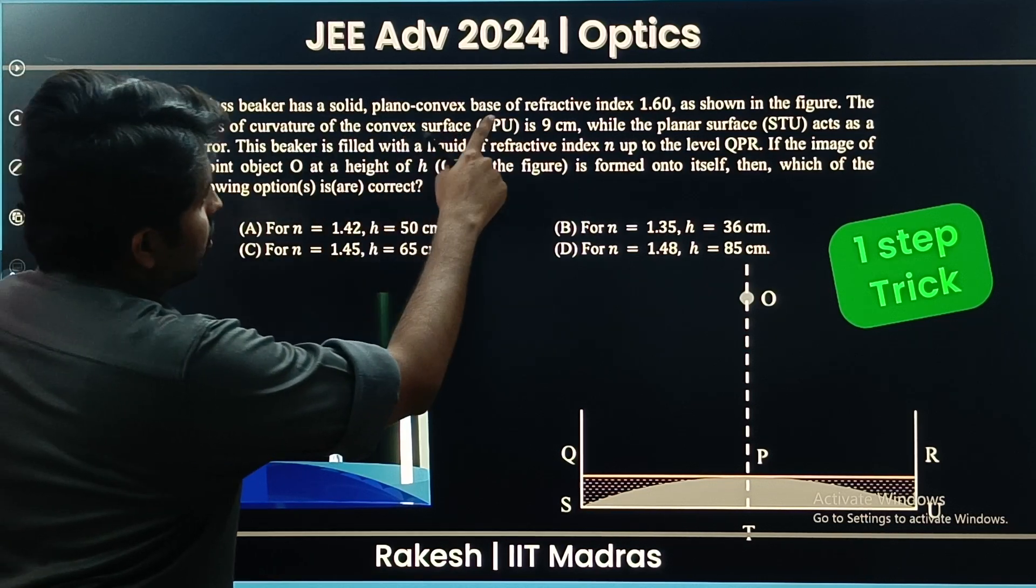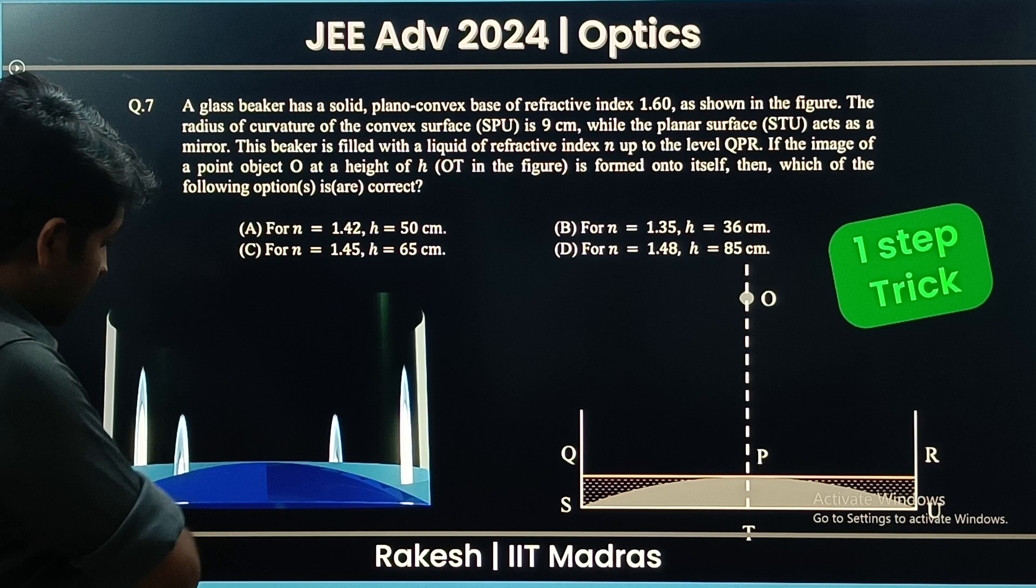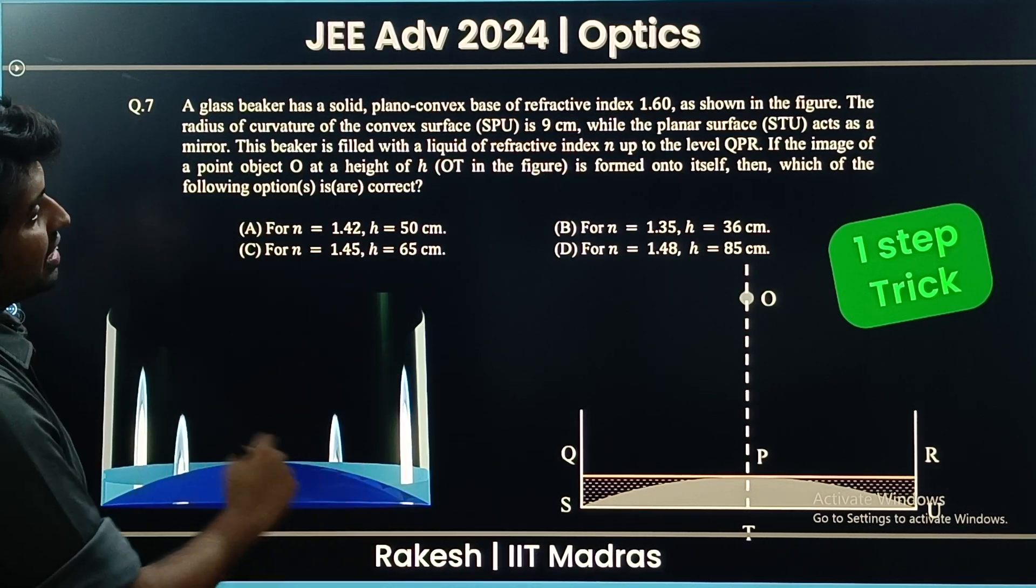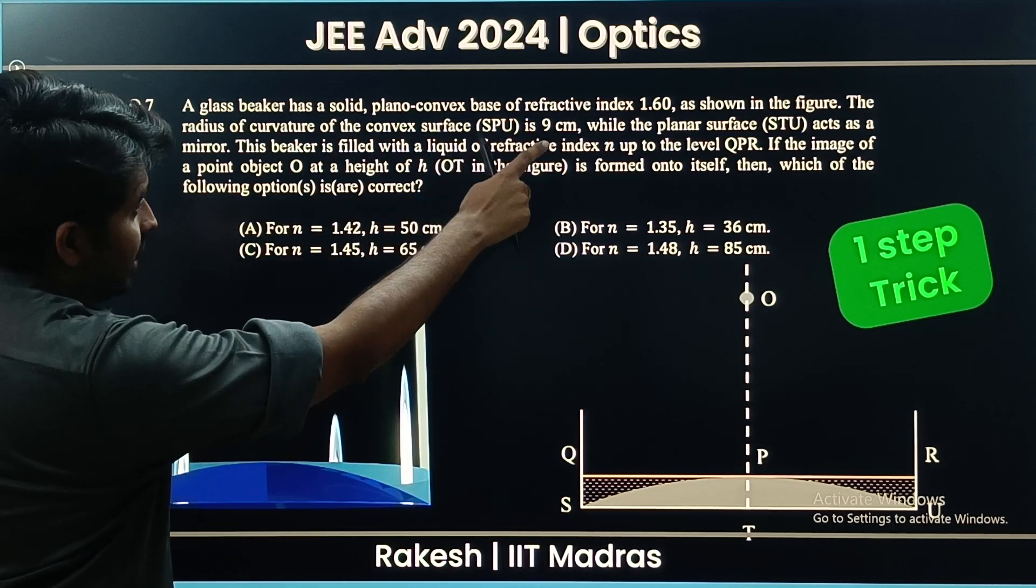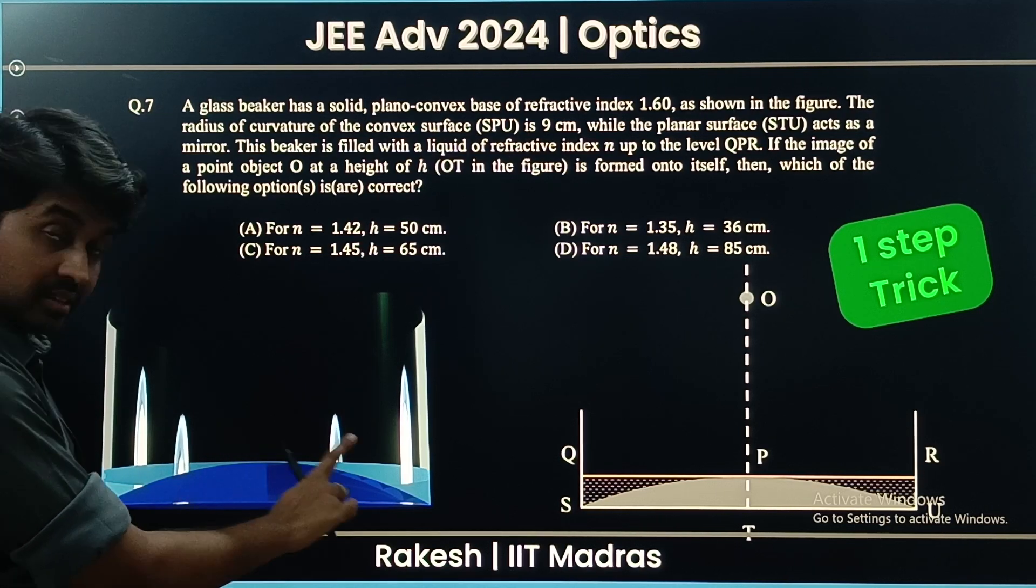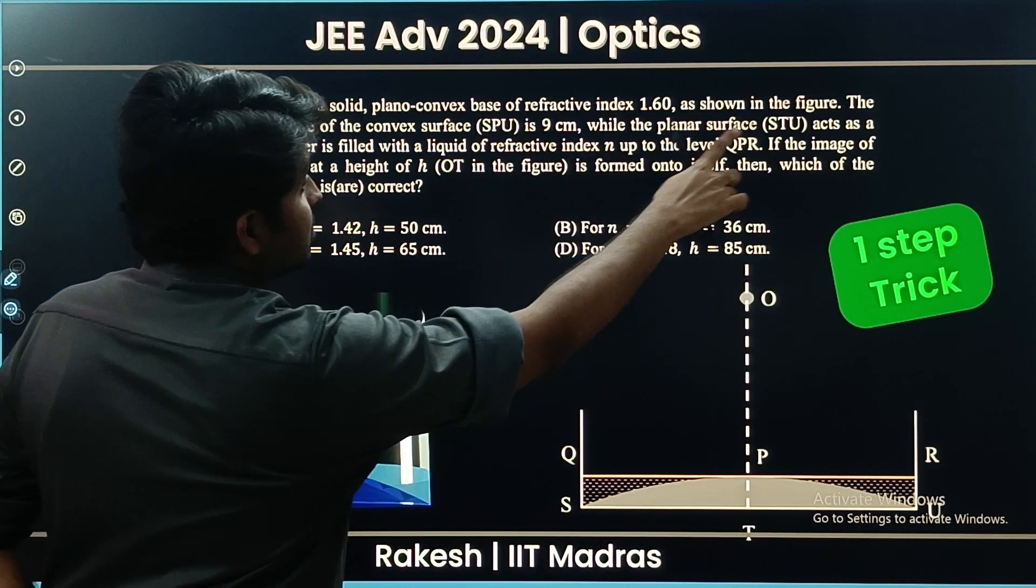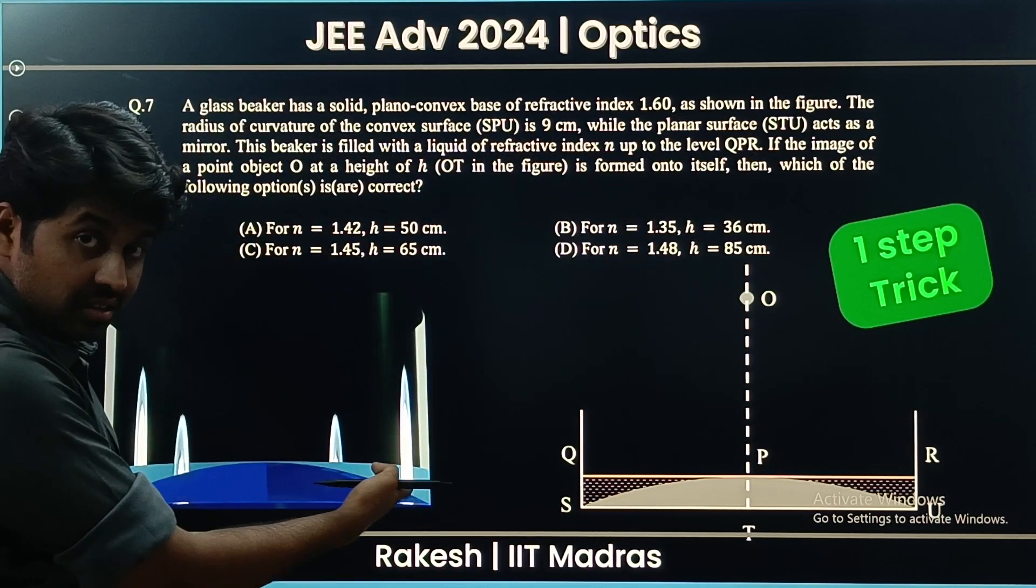A glass beaker has a solid planoconvex base of refractive index 1.60 as shown in the figure. There is this glass beaker with a planoconvex lens. The radius of curvature of the convex surface is 9 cm, while the planar surface acts as a mirror. The base that you see is a mirror.